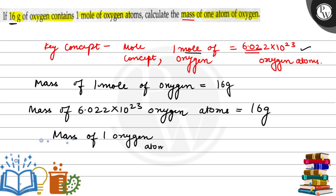For that we will simply divide this. That is, 16 divided by Avogadro's number 6.022 into 10 to the power 23. So on solving this, what we get is 2.65 into 10 to the power minus 23 grams.